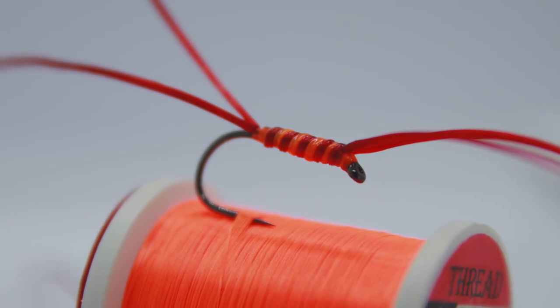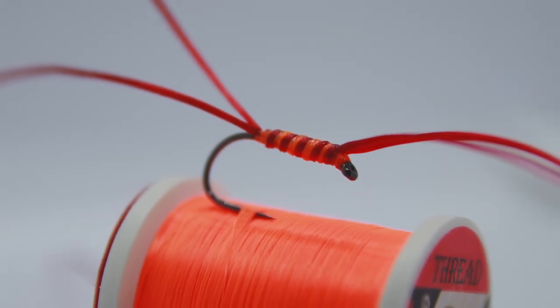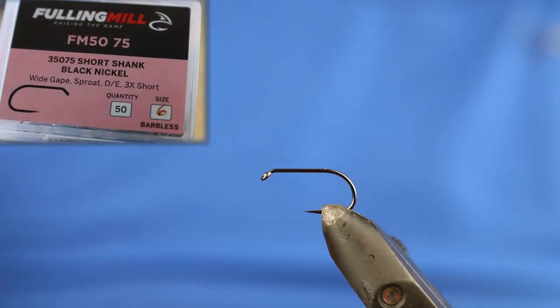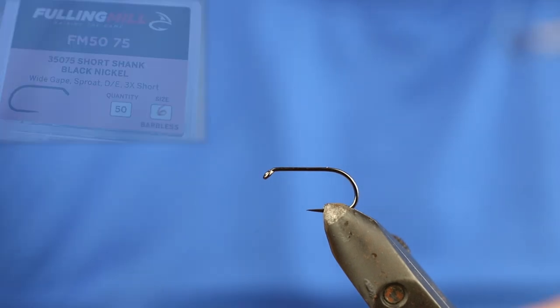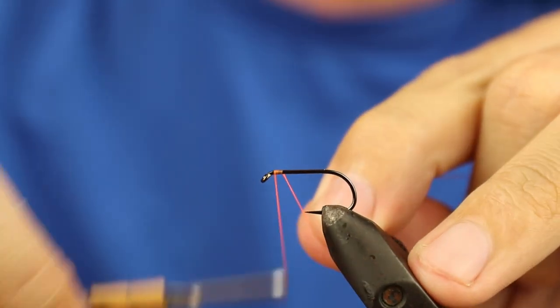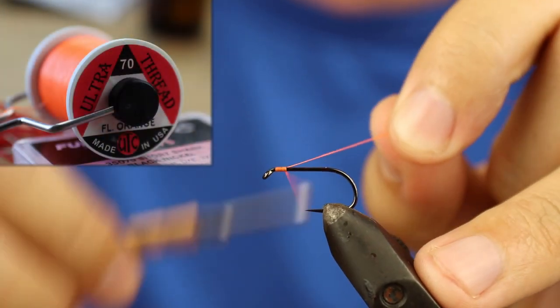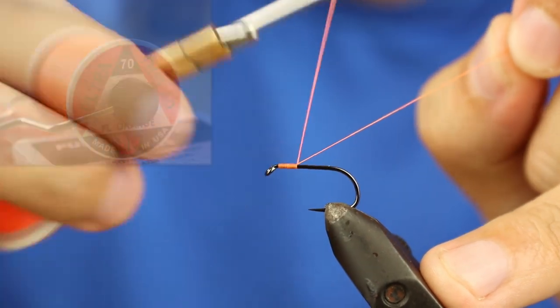Okay, so the Brandlin. The hook I'm using is a short shank black nickel fulling mill in size six. The thread I'm using is some UTC fluorescent orange centi, and I'm going to start by